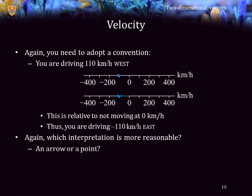Again, which is more reasonable? Is it a point on the speed or velocity line or is it an arrow? In this case, because it is movement, some people may consider this to be an arrow.